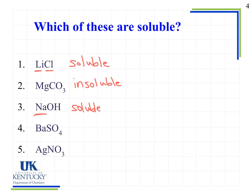Number four: barium sulfate, BaSO₄ — soluble or insoluble? This one will actually be insoluble because while sulfates are generally soluble, barium sulfate is one of the exceptions to the rule. Number five: AgNO₃, known as silver nitrate — soluble or insoluble? When we see nitrate, we know that it's going to be soluble because nitrate compounds are always soluble regardless of the cation they are paired with.